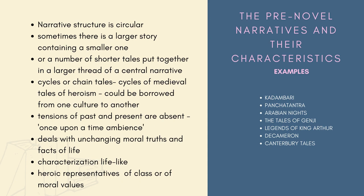Now let's see about the pre-novel narratives and their characteristics. Some examples are Kadambari, Panchatantra, Arabian Nights, The Tales of Genji, Legends of King Arthur, Decameron, and Canterbury Tales. These pre-novel narratives are circular in their narrative structure — sometimes a larger story contains a smaller one, or a number of shorter tales are put together in a larger thread of a central narrative. Cycles of chain tales are visible, and medieval tales of heroism could be borrowed from one culture to another. The tensions of past and present are absent, with the usual 'once upon a time' ambience. They deal with unchanging moral truths and facts of life, and the characterization features heroic representatives of a class or of moral values.